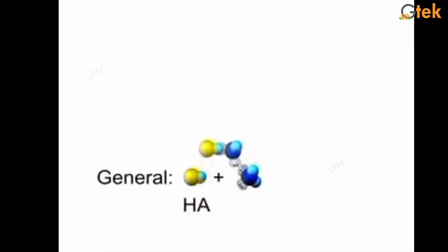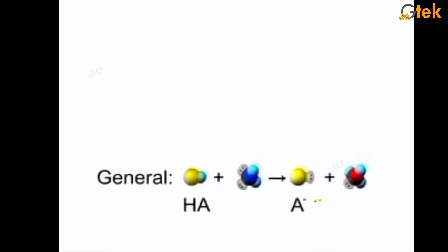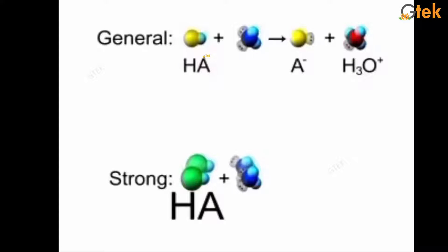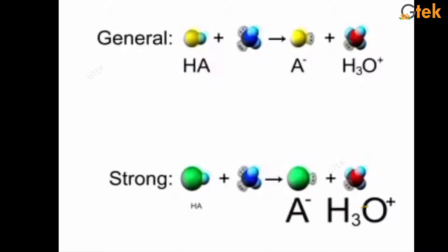Here you can see acid HA in general reacts with water or other molecules and starts giving ions, forming A⁻ and H⁺. The water molecule becomes H₃O⁺. This is how an acid reacts in general. If it is a strong acid, it will fully give A⁻ ions, demonstrating the general property of an acid, and it is then considered a strong acid.